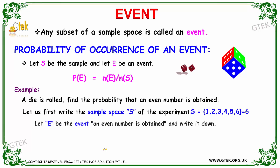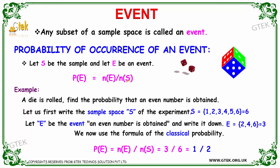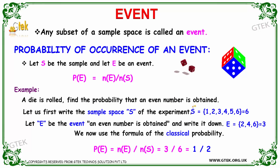Any subset of a sample space is called an event. The probability of an event is equal to the number of possible outcomes satisfying the condition divided by the total number of samples in the sample space. Now, a die is rolled and we need to find the probability of getting an even number.